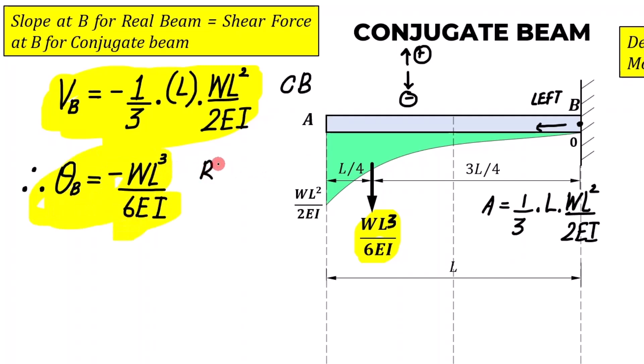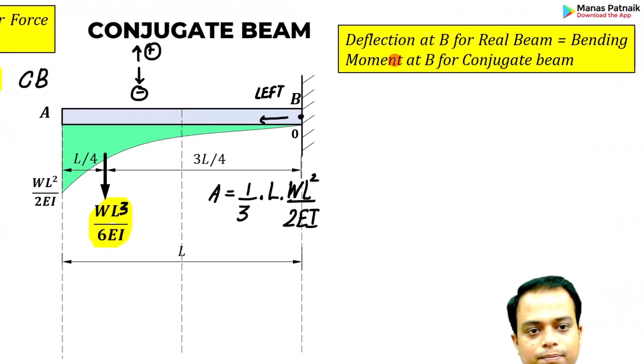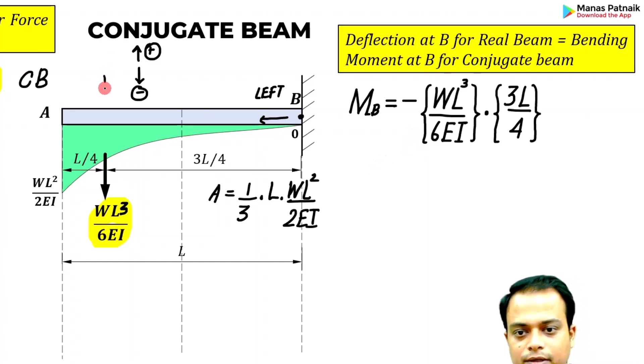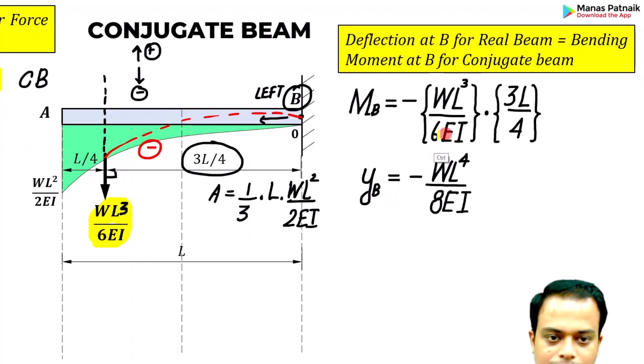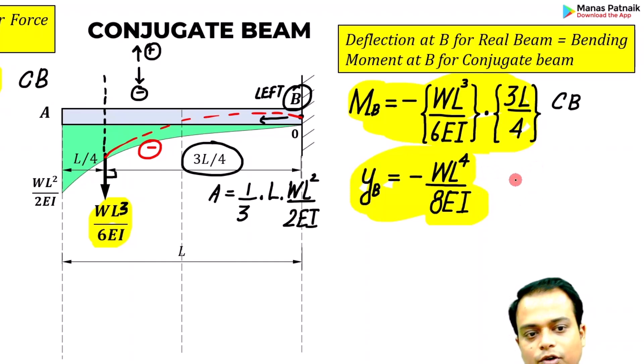And now let's do the calculation for bending moment of the conjugate beam. This is the load acting and this is the perpendicular distance from B. Force is wL cubed upon 6EI, perpendicular distance is 3L over 4. A sagging bending moment because the beam would be acting in this fashion. It is a clear case of sagging, therefore a negative sign. Let me reiterate: what the bending moment calculation for the conjugate beam will give you is the value of deflection for the real beam.